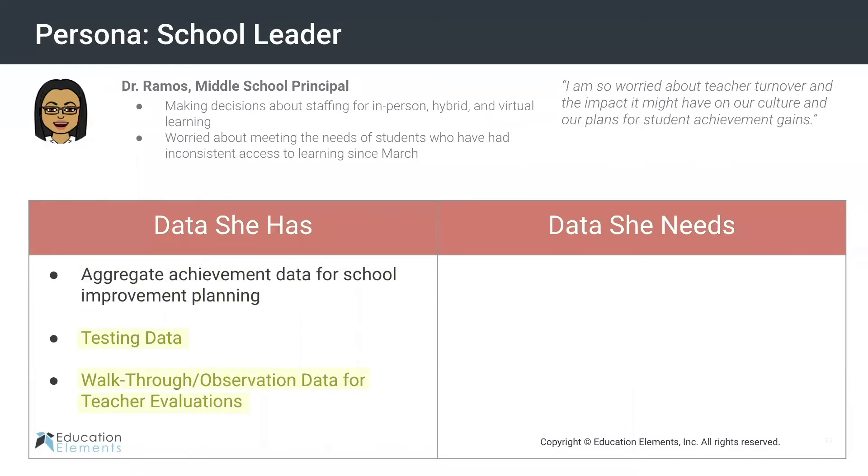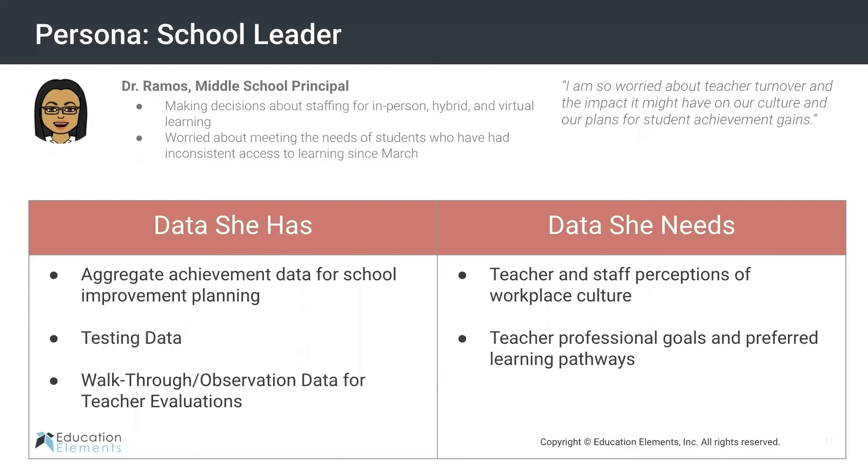She'll have testing data and walkthrough and observation data on each of her teachers. But we challenged ourselves to think that if she also had information like teacher and staff perceptions of workplace culture, or the professional goals and preferred learning pathways of each of her teachers, that might change how she thinks about teacher assignments. No longer is she deciding which teachers are teaching virtually, which are teaching in school, or which are tackling hybrid learning just based on achievement data — if she's also considering the workplace culture needs of those teachers and their own professional goals and interest in instruction.